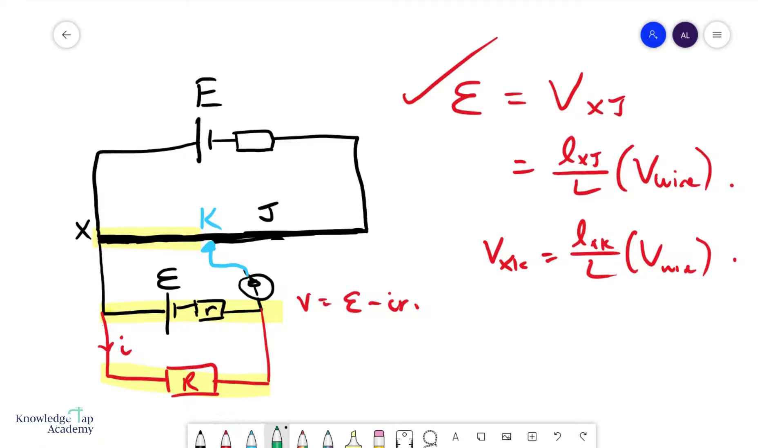But you see what we do after that. We allow VXK, which is now known, to equal I times the known resistance R. And we use this to figure out what I is. So the current in the circuit is now known.